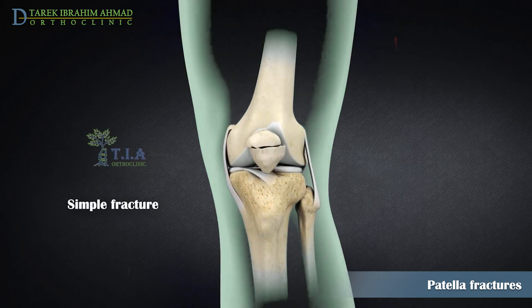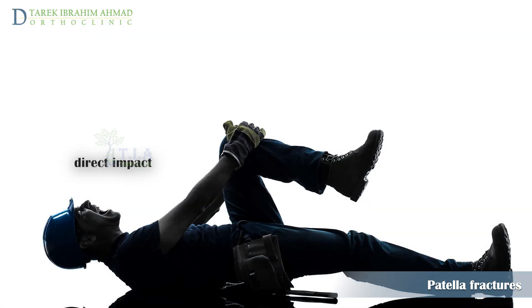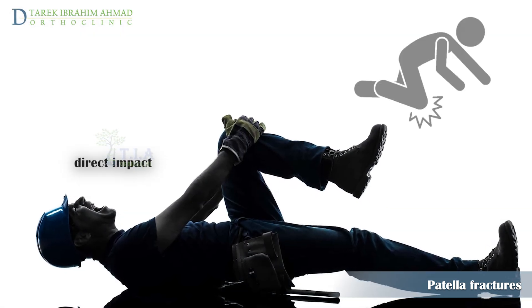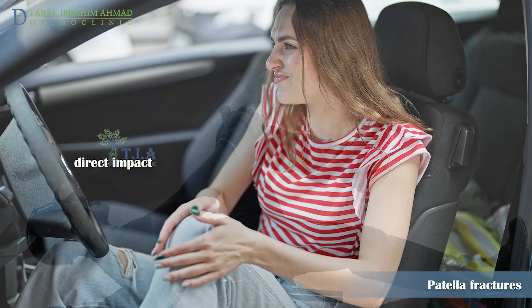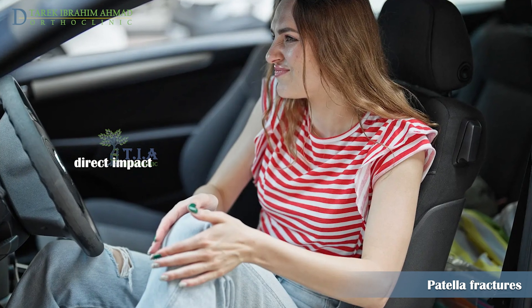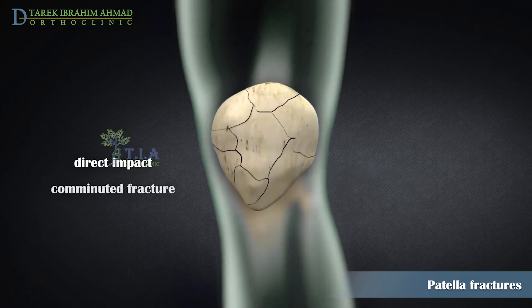A fracture may be a simple clean two-piece break, or the bone can break into many pieces. A break can occur at the top, center, or lower part of the bone. It is usually caused by direct injury, such as a fall onto a flexed knee or striking the dashboard during an automobile accident.